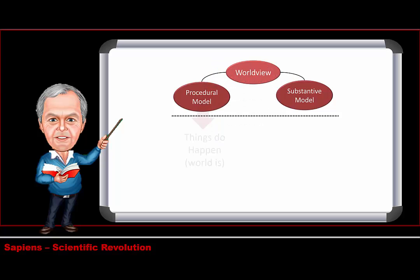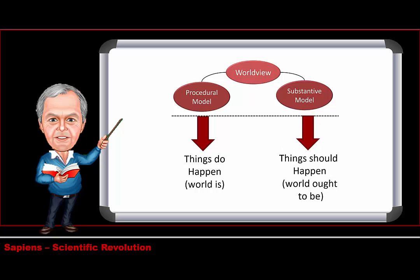In their worldview, people come up with procedural models — this is how things happen, how the world is — and a substantive model — this is how things should happen, how the world ought to be. Both of those are basically sourced from and circle around the European model. That's what Harari is saying.